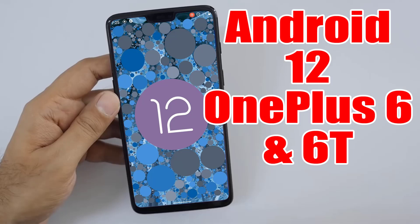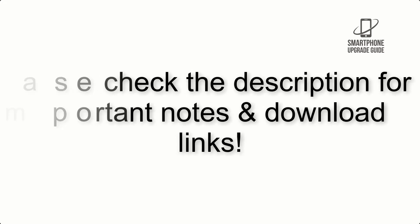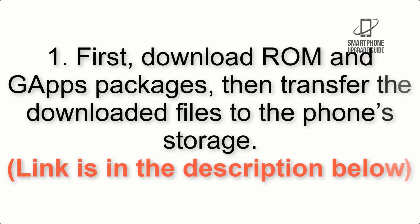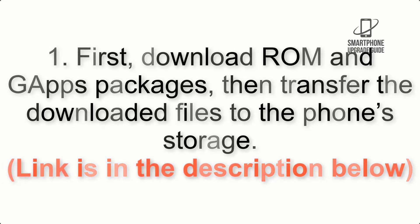Install Android 12 on OnePlus 6 and 6T via Lineage OS 19.1. Please check the description for important notes and all the download links. First, download the ROM and GApps packages, then transfer the downloaded files to the phone storage. The link is in the description below.